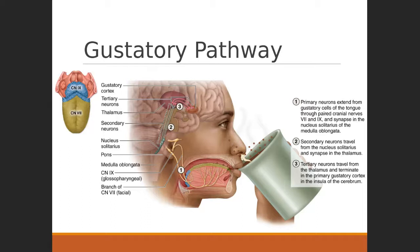The primary neurons extend back to the nucleus solitarius of the medulla oblongata — a nucleus for those primary neurons in the brainstem. Secondary neurons then proceed to the thalamus. The thalamus is a very involved relay station when it comes to perceived sensation — virtually any stimulus that makes its way to the parietal lobe passes through at least a part of the thalamus first. That's what we see here with gustation: primary neurons from the tongue proceed to the nucleus tractus solitarius, synapse with a secondary neuron heading to the thalamus.